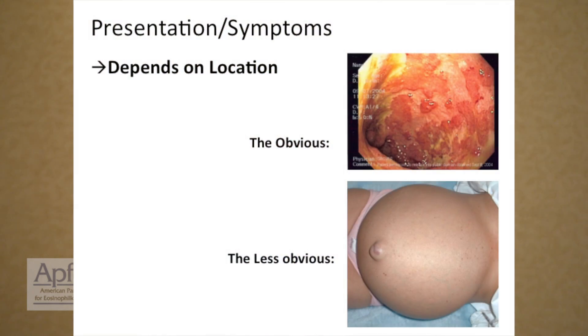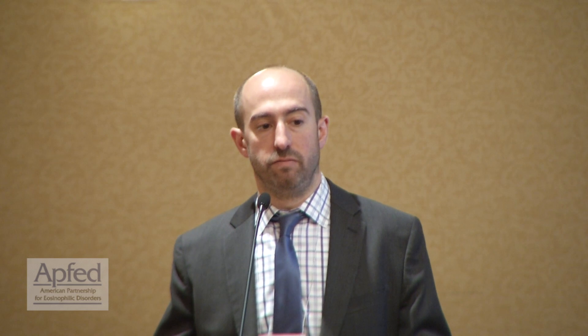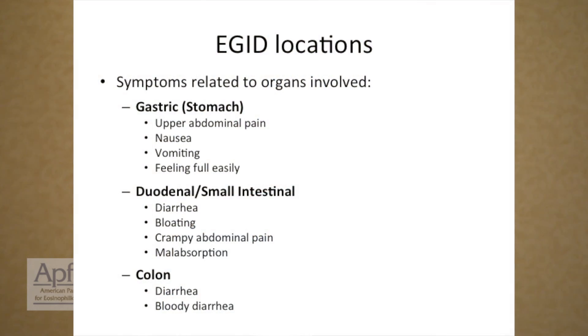There are also less obvious symptoms. On the lower right picture, you see someone who has a fluid accumulation in their belly called ascites, and that can also be a manifestation of eosinophilic gastrointestinal diseases of the small bowel. EGID locations are related to the organs involved — the symptoms and manifestations are related to whatever organs are involved with the eosinophilic infiltration.